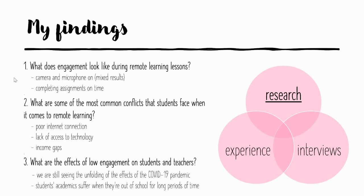Half of the articles I read made the case that students need to have their camera and microphone on to prove they are there, but on the other hand many educators said it's not always possible or the best situation. Sometimes students are unable because they don't have a device with a camera and microphone, or they are uncomfortable showing themselves on camera. Reasons include not wanting to stare at themselves all day on Zoom, not wanting peers to see their home, a messy room, a crowded area, or loud background noise — students feel almost ashamed to have their cameras on.